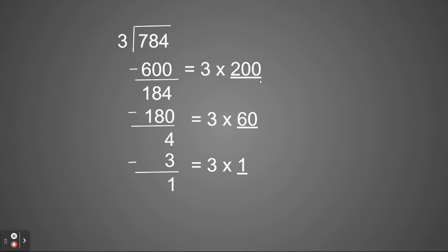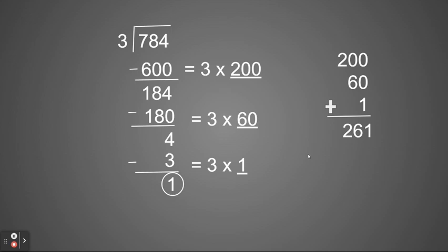Again, just like before, I'm going to take my different partial quotients — my 200, 60, and 1 — and add them together. I will get a total of 261. I do still have my 1 remainder left over just like I did last time. So my answer will be 261 with a remainder of 1.